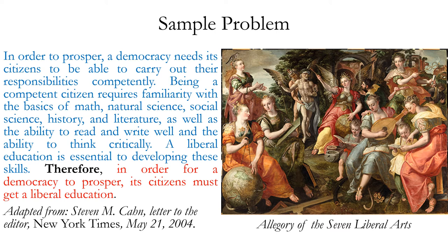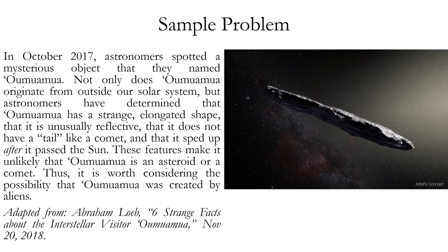The third sentence, 'a liberal education is essential to developing these skills,' brings it all together to help prove the conclusion. The conclusion mentions liberal education but not the specific subjects like math or science, which is why we need that third sentence as a premise. Collectively, the three premises prove the conclusion that citizens must get a liberal education for democracy to prosper.